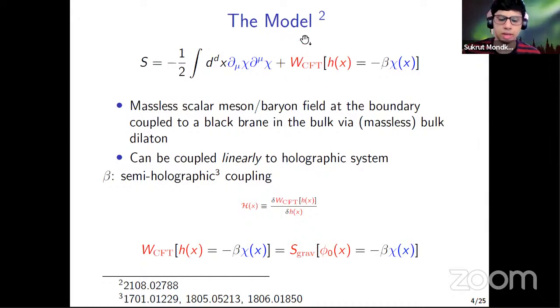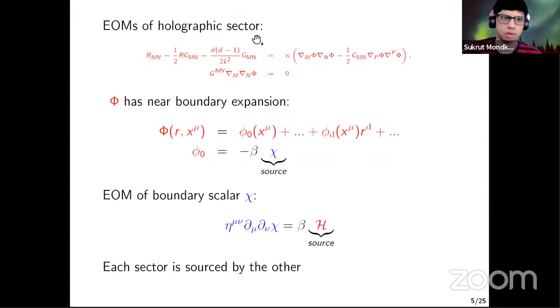So since CFT is holographic, it is dual to some black brane in the bulk with the deformation corresponding to the dilaton in the bulk. And since this coupling is linear, it will modify the quasi-normal mode spectrum of this black brane. Now, this O_chi is the CFT operator dual to the bulk dilaton. And according to the CFT dictionary, we have this relation where W_CFT is same as the on-shell gravity action of dual gravity theory, with the source small h replaced by this phi_0, which is the leading term in dilaton near-boundary expansion.